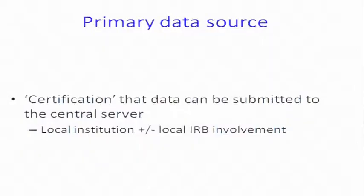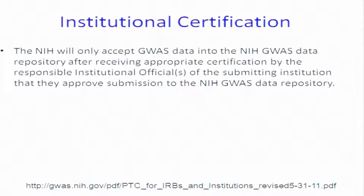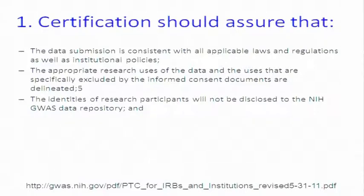The other issue for the primary data source: I assume there would be some kind of certification that the data going into the server was appropriate. Again, dbGaP is a wonderful place to look. Institutional certification — you'll only accept GWAS data into the repository. That's really important. It's your institution signing off, and when you look at what they're signing off to, it's so many things I had to put it on two slides.